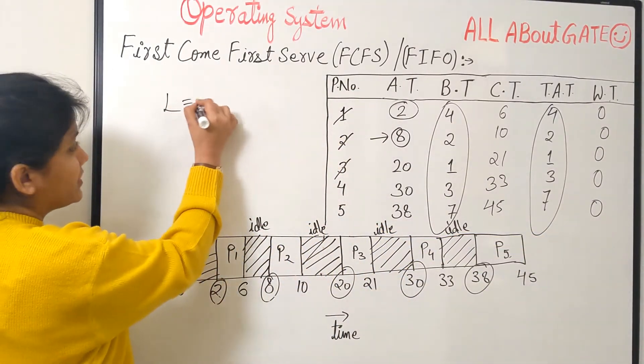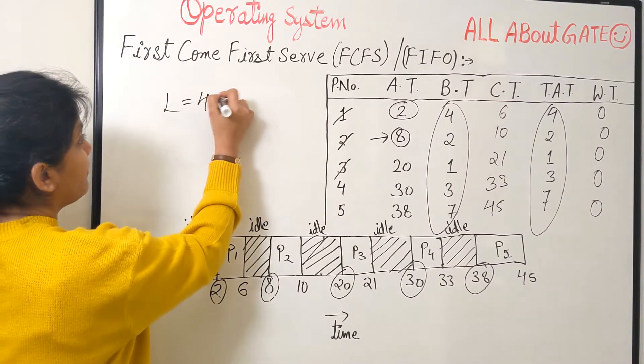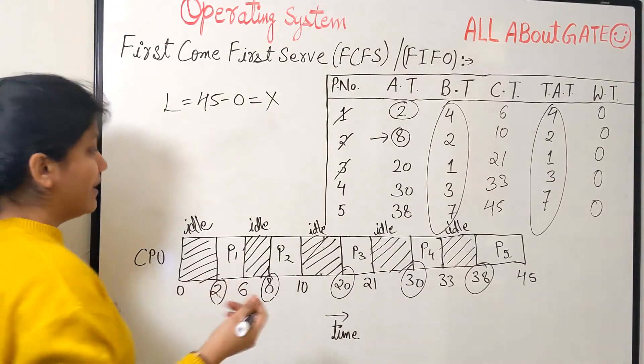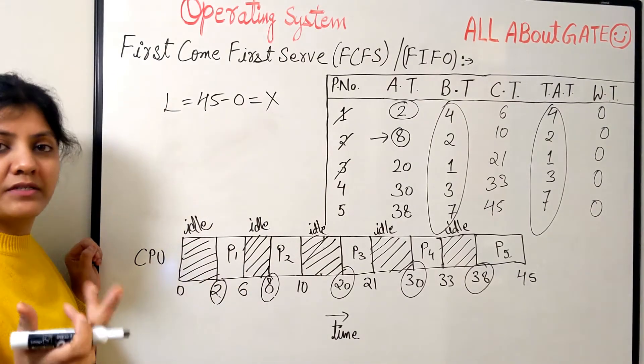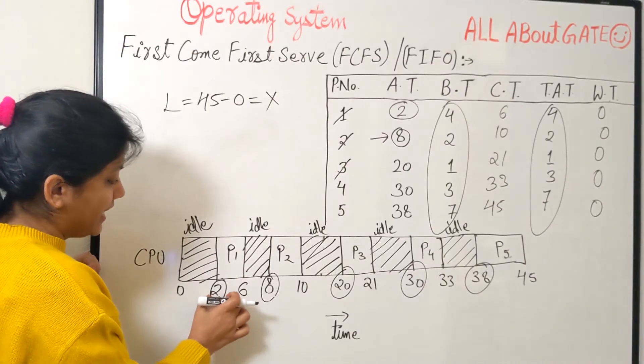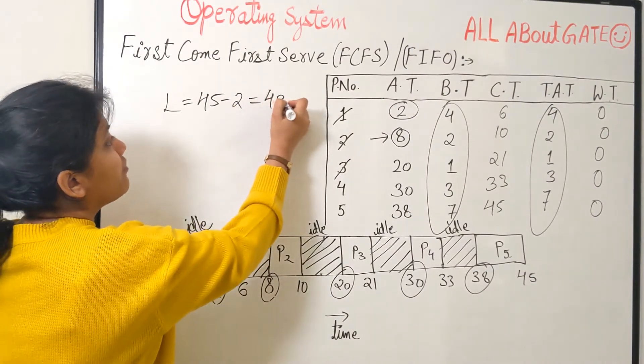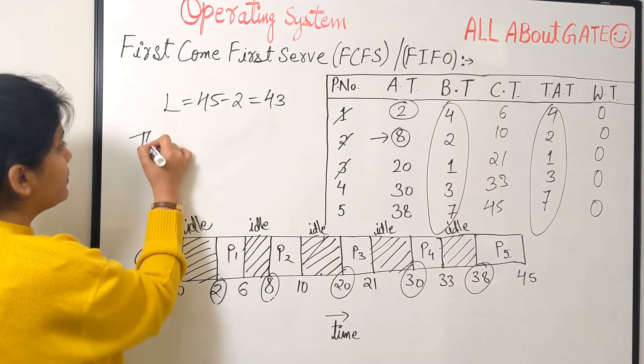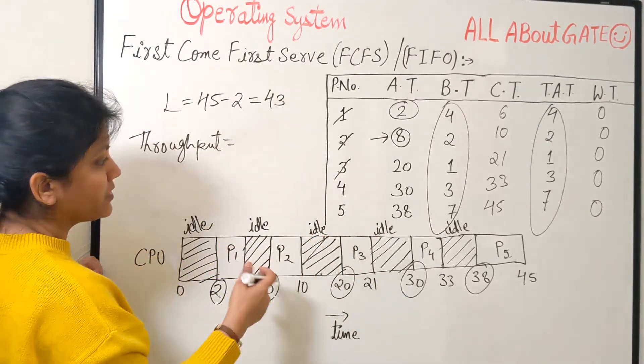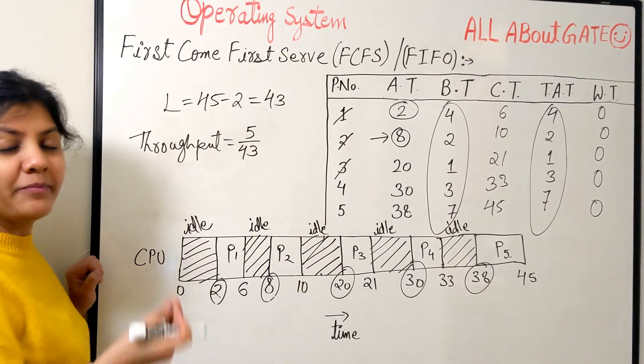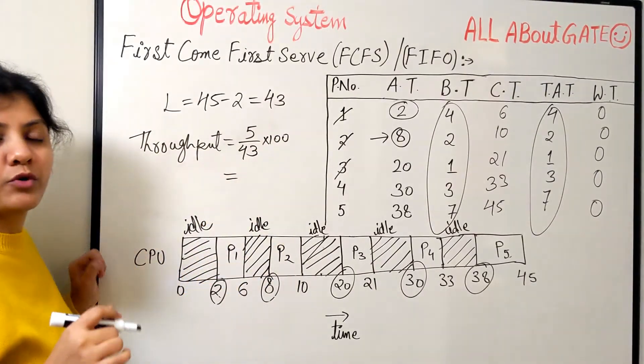Now another factor here is what is the scheduling length? So you might say 45 minus 0. Wrong. Why? Because initially the very first process was available at time 2. This 0 to 2 burst is idle burst. There is no execution happening here. This is the time when the first process came into the system. So it should be 45 minus 2. That is 43. This is the schedule length. And now what becomes the throughput? We have 5 processes divided by the amount of time taken for their execution. If you want to take it in percentage you can multiply by 100.